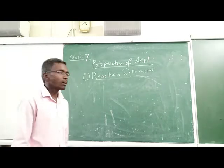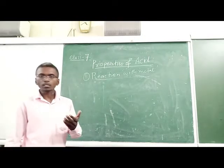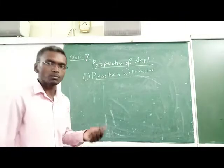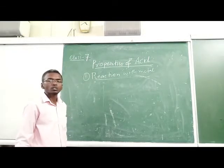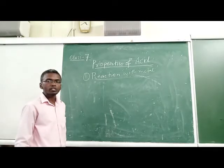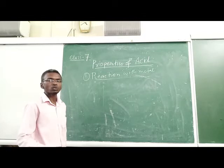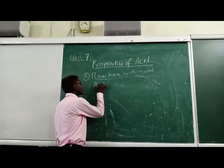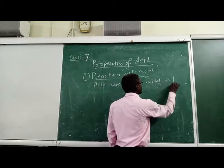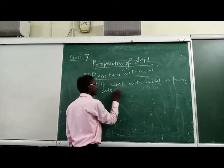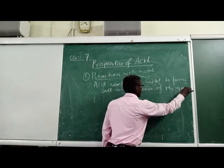Let us start with reaction with metals. How they show different reactions with different metals. Keep in mind: Metal reacts with acid to form salt with release of hydrogen gas. Metals acid ke saath react karte hai aur salt form karte hai aur hydrogen gas release hota hai. Acid reacts with metal to form salt with release of hydrogen gas.